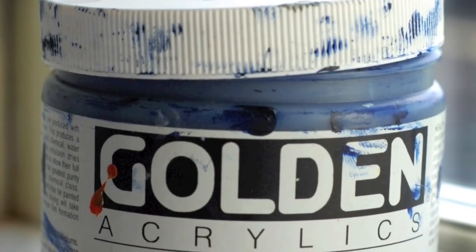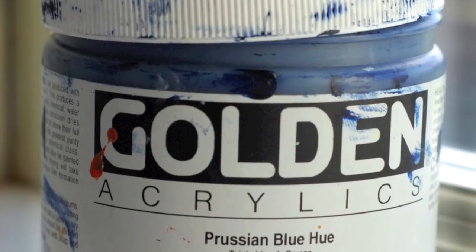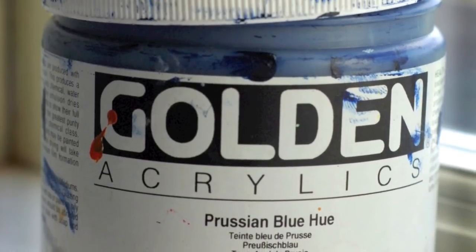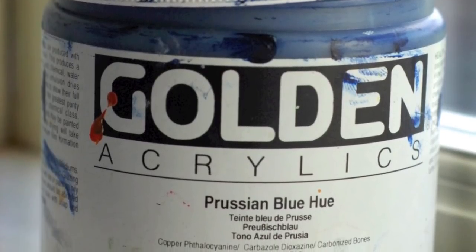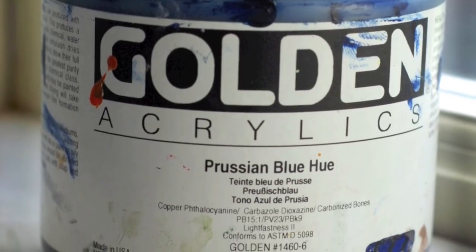If you want to still just use a blue and a brown, you can go one stage further and use Prussian blue. Prussian blue is a pre-mixed blue, and it is actually made from a combination of like thalo blue and black in it.